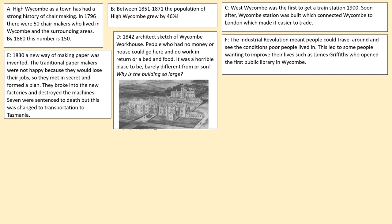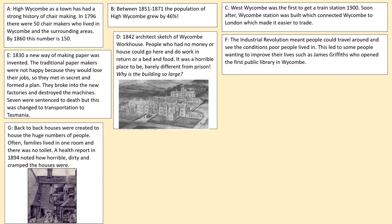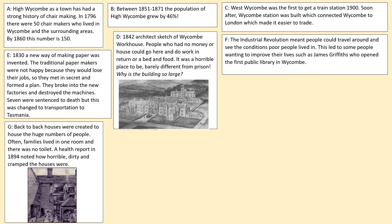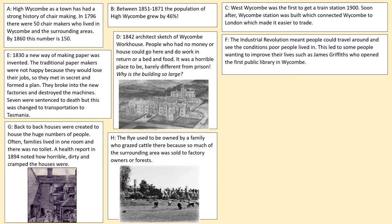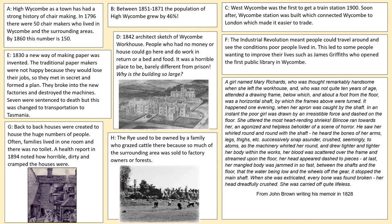The Industrial Revolution meant people could travel around and see the conditions poor people lived in, which led to some people wanting to improve their lives — such as James Griffiths, who opened the first public library in Wycombe. Back-to-back houses were created to house large numbers of people; often families lived in one room and there was no toilet. A health report in 1894 noted how horrible, dirty, and cramped the houses were. The Rye used to be owned by a family who grazed cattle there, because so much of the surrounding area was sold to factory owners or was forests. There is also a final source about a factory accident involving a small child — you're welcome to read it, or you can ignore it if you prefer.